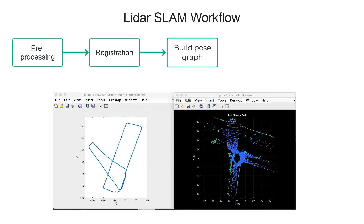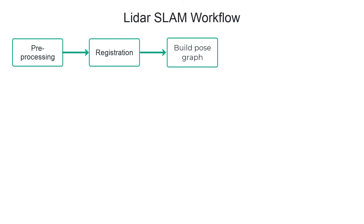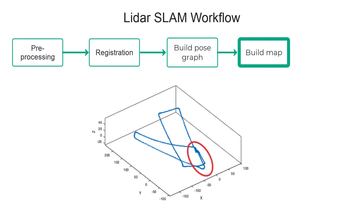Once you have the relative poses, you can then align the point clouds to build a point cloud map. But if you closely observe the pose graph, you will notice that using only the registration for localization can lead to a drift.